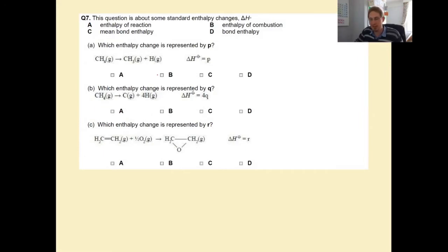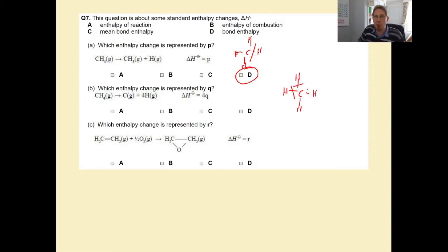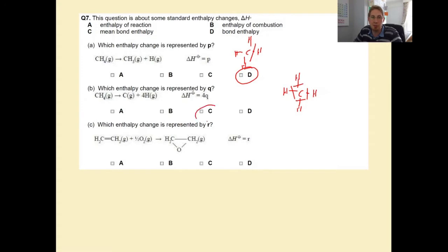Four definitions: enthalpy of reaction, mean bond enthalpy, enthalpy of combustion, and bond enthalpy. Which enthalpy change is represented by methane splitting into CH₃ and H? We have broken one bond but only one - that gives us a bond enthalpy, so that is D. Most of you got that correct but only 82%. If we split the methane molecule up and break all the bonds, each bond broken gives slightly different energy, but overall that gives the mean bond enthalpy - it's an average of all the C-H bonds.